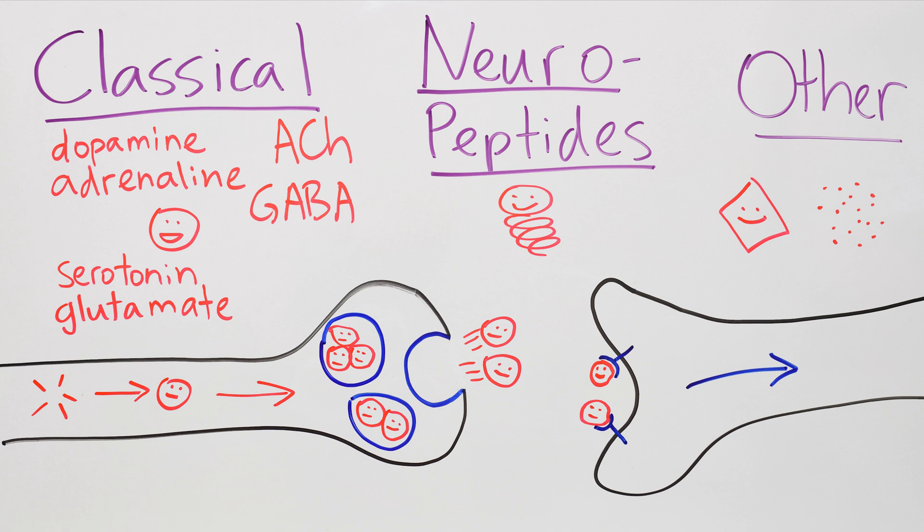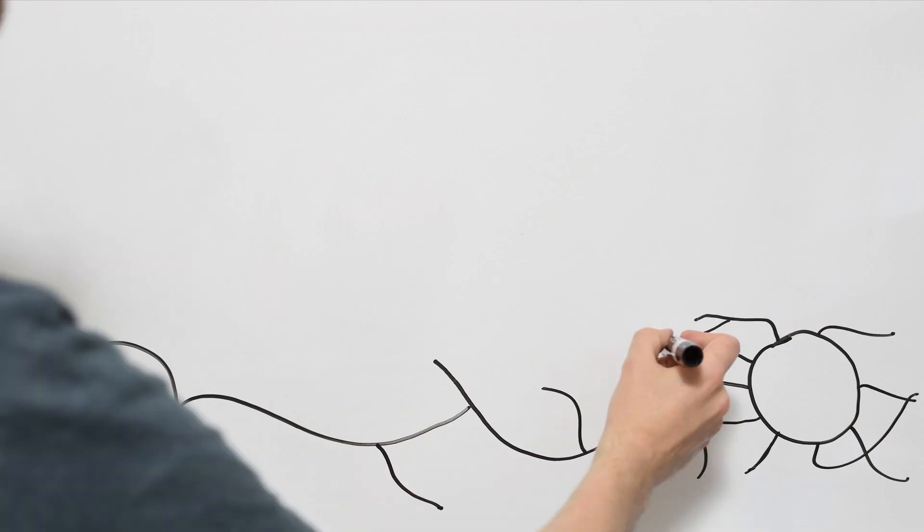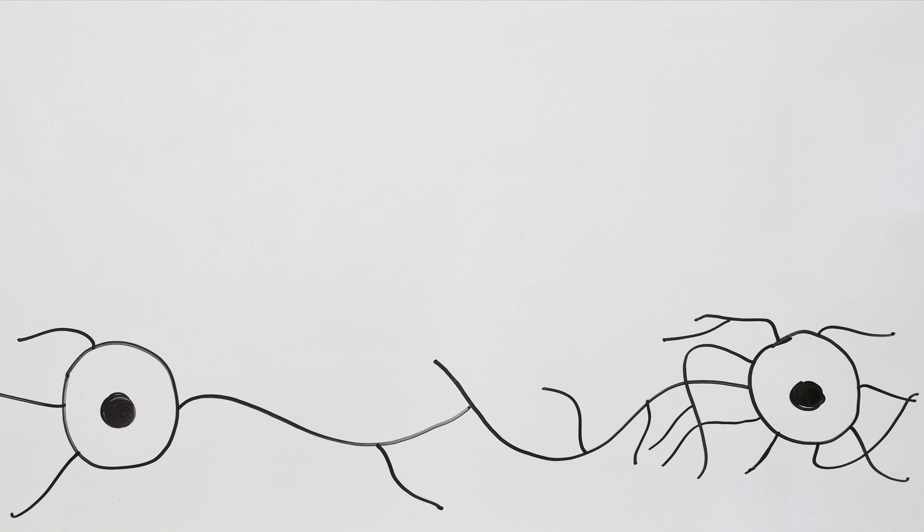So, let's get started. Before we get into the main story, let's start with a prologue. Long ago, there were many different neurons. Here are two of them, for example, and they liked to send electric spikes to each other as messages. But when the messages got to the end of the neuron, there was a problem.